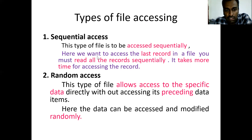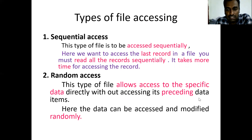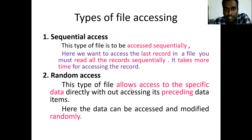In sequential access, if you want to read the last information in the file, you must go through from the starting itself — taking more time to access the record. Next, random access: this type of file access allows you to access specific data directly without going through other data items. Wherever we want the data, we just directly go to that data and read it. That is random access — we can randomly access and modify the data.